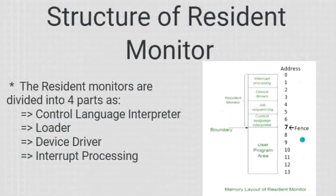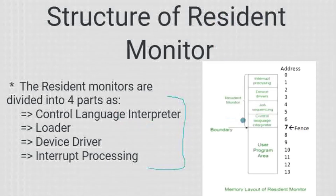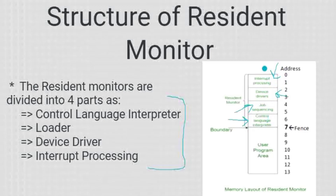Resident monitors को represent करने के लिए एक specific structure है। Resident monitors are divided into four important controls: first is Control Language Interpreter, then we have a Loader, then Job Sequencing, then Device Drivers, and last is Interrupt Processing। यह चार important functionings हैं जो आपके system की functions की तरह से काम करेंगे — इन सबको मिला कर resident monitors कहते हैं। बाकी बचा हुआ portion user program area है — जहाँ पर users के programs execute होते हैं।